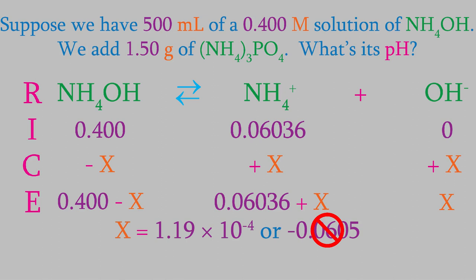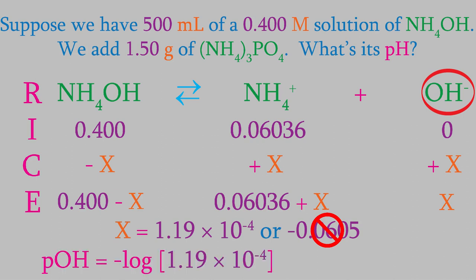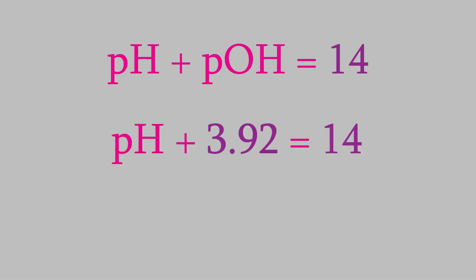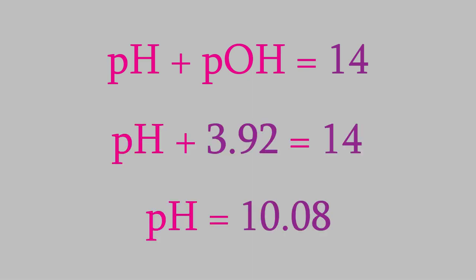We're almost done, but be careful — we're working with a base, so our reaction has hydroxide, not hydrogen ions. That means we calculate the pOH first: we get a pOH of 3.92. As you may remember from video 20, pH and pOH always add up to 14, so the pH here is 10.08.